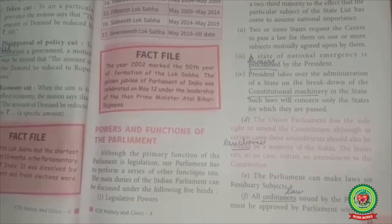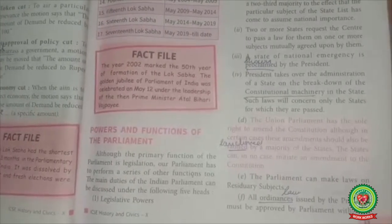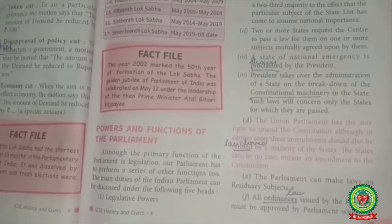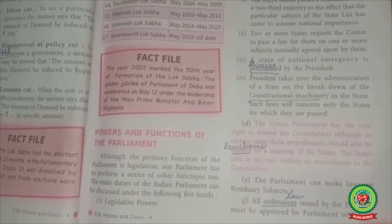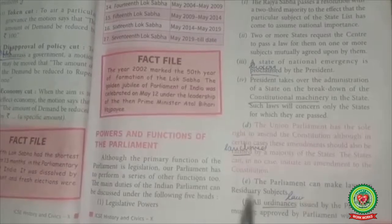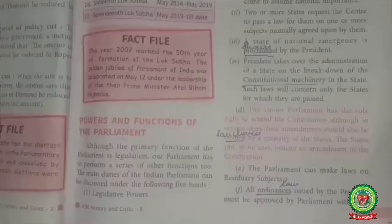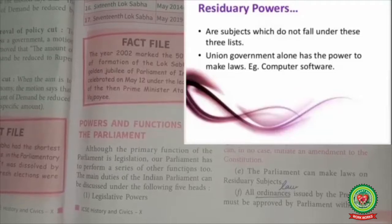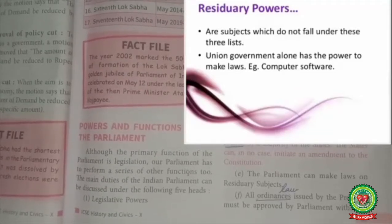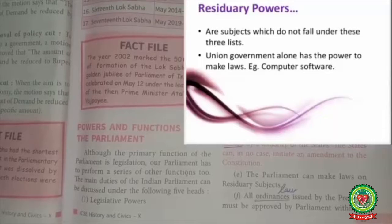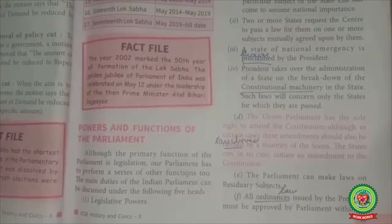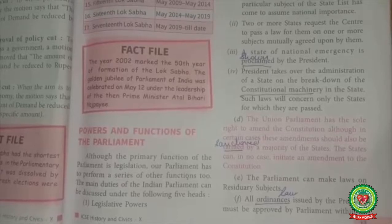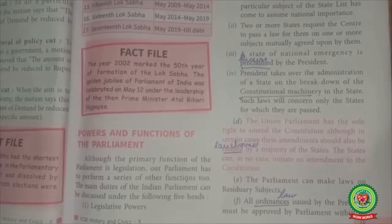In some cases, like fundamental rights and directive principles, these are two most important provisions that can be amended by special majority. Parliament can also make laws on residuary subjects — those subjects not present in any list mentioned in the constitution, like computer software, e-commerce, etc. These subjects came into being after the constitution was created, and Parliament can make laws on them.